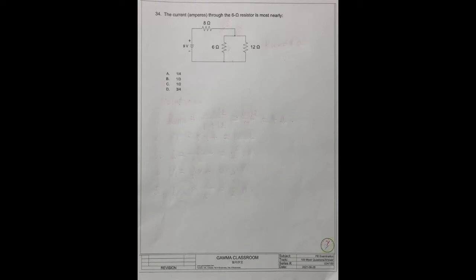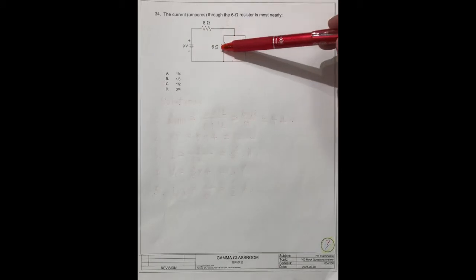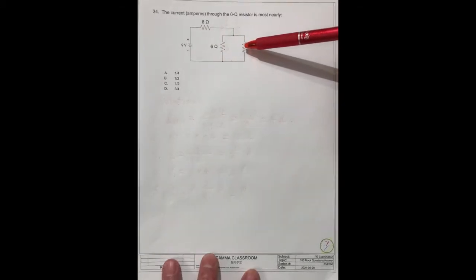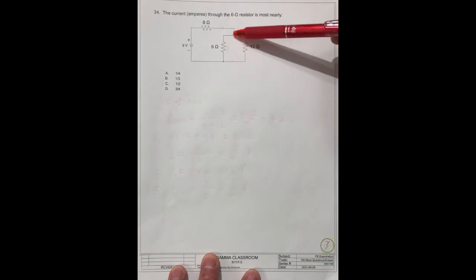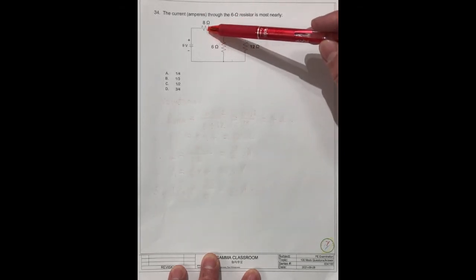So when you see these questions, you know this is a simple circuit. This resistor with this one is a parallel connection, and these two together with this one is a series connection.